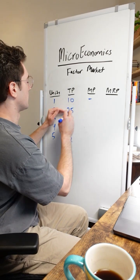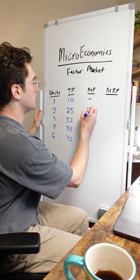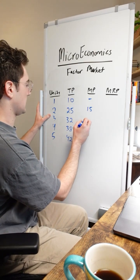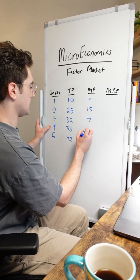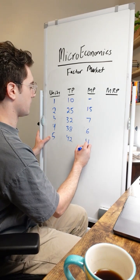But the second unit here, the second machine, generated 15 units of product. The third machine generated seven, the fourth generated six, and the fifth generated four.